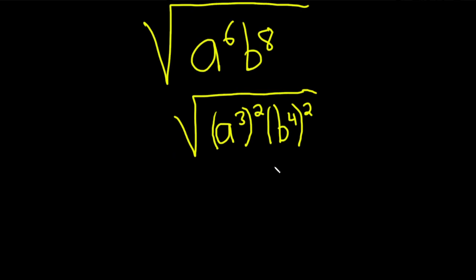So now we can combine these, or you can just take the square root of each piece, but I'll go ahead and combine them because it looks cooler. So this is parentheses a cubed b to the fourth.